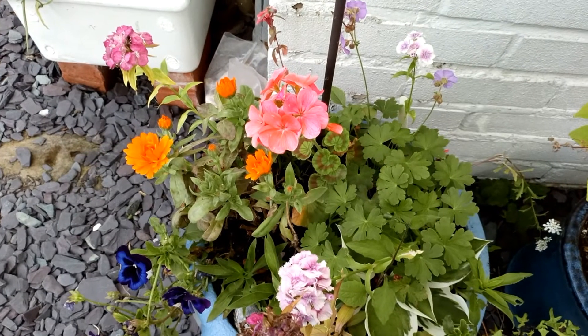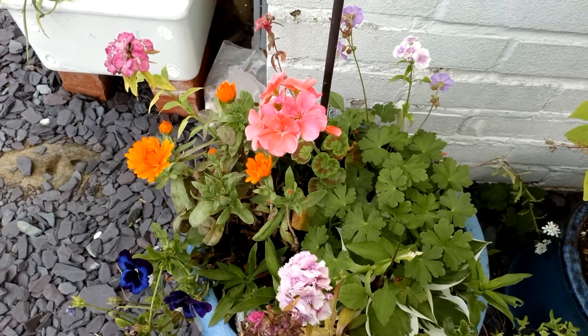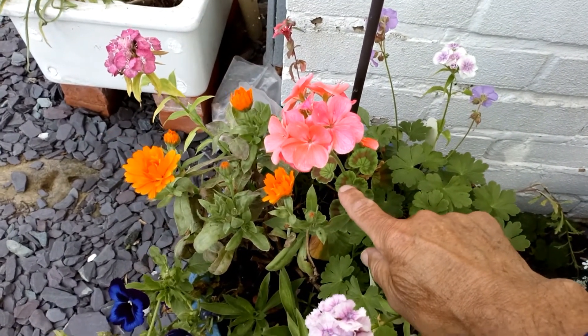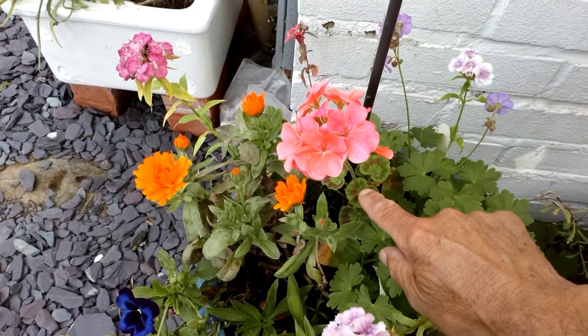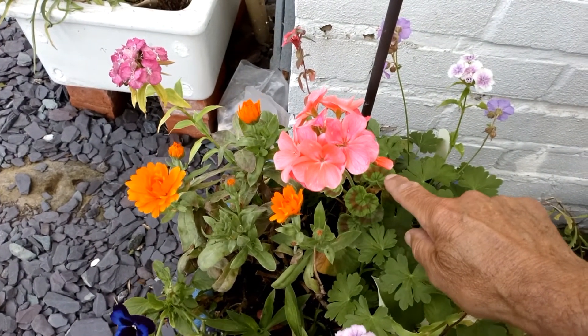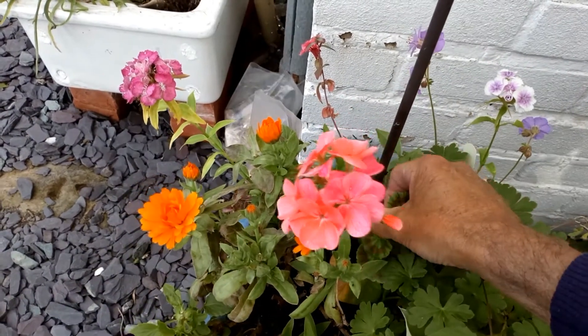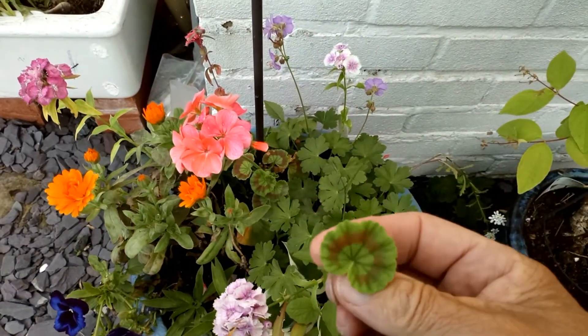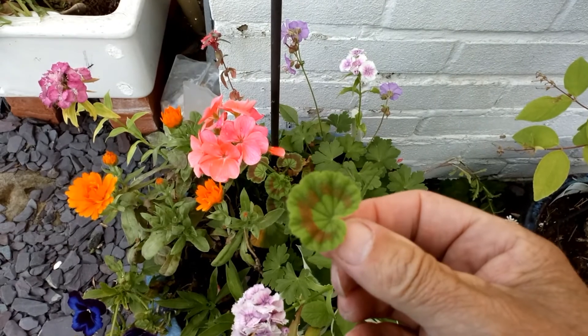Now geraniums are particularly good for this experiment. So here is a geranium in flower and these down here are the leaves. So what I'm going to do is take one leaf from there. And we're going to test this leaf to see whether it contains starch.